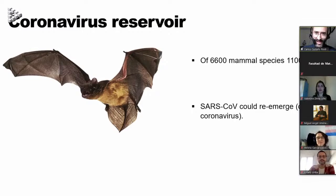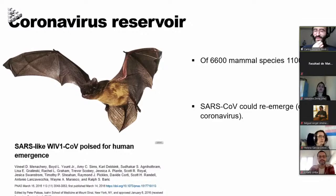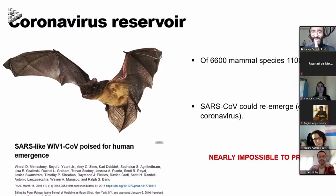Bats are the reservoir of human coronaviruses. Out of 6,600 mammal species, 1,100 are bats. This is why coronavirologists used to say in their talks that SARS coronavirus could reemerge, or a new coronavirus could appear. There are actually reports of coronaviruses very similar to SARS, poised for human re-emergence in different bat species. We cannot control the ecological dynamics of animal populations, and it is very difficult to predict when a new virus is going to emerge.